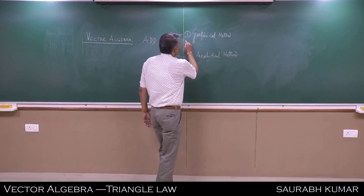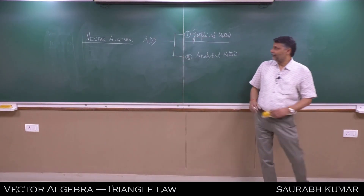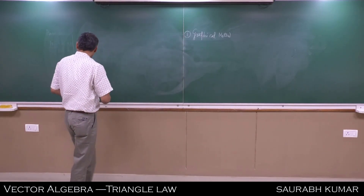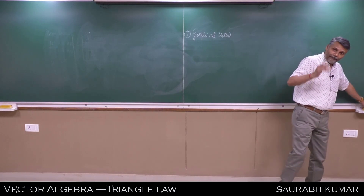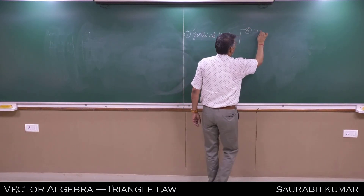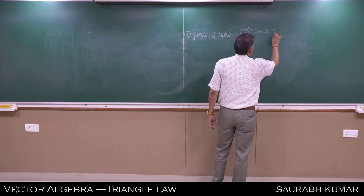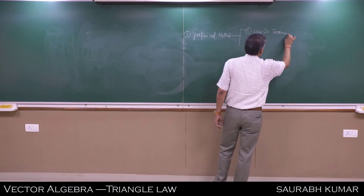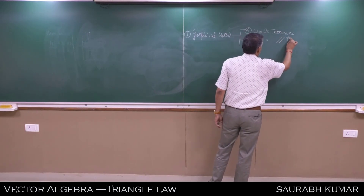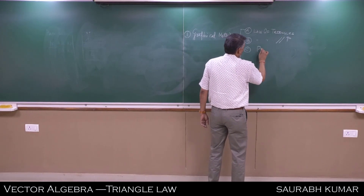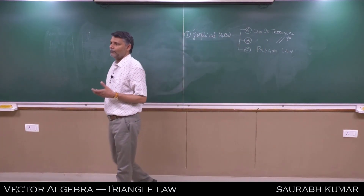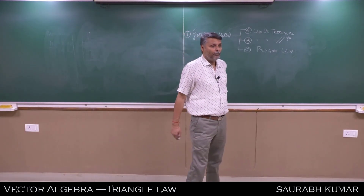So first let us discuss the graphical method. In the graphical method we have three laws: A - law of triangles, B - law of parallelogram, and C - polygon law.